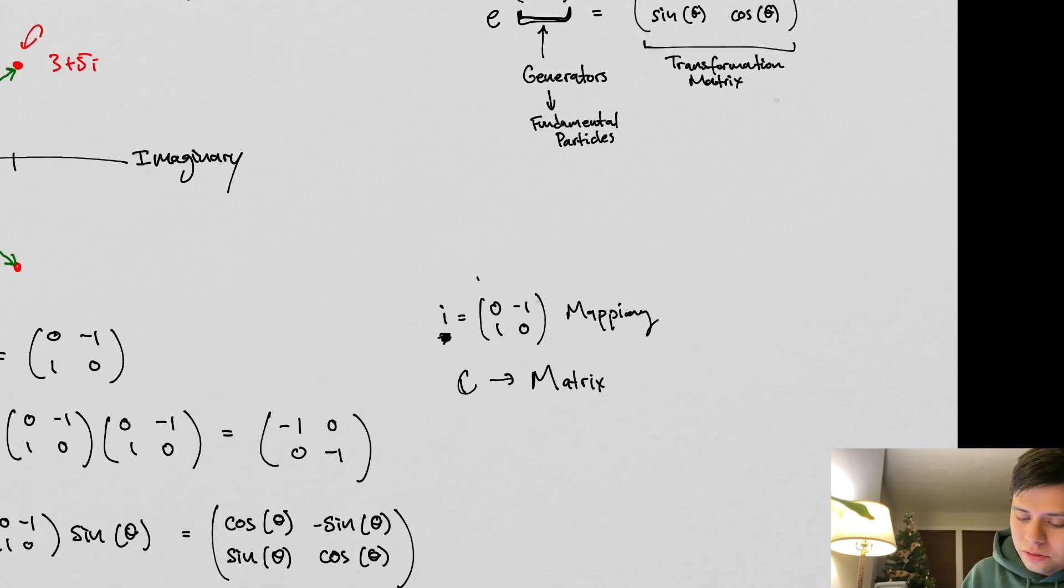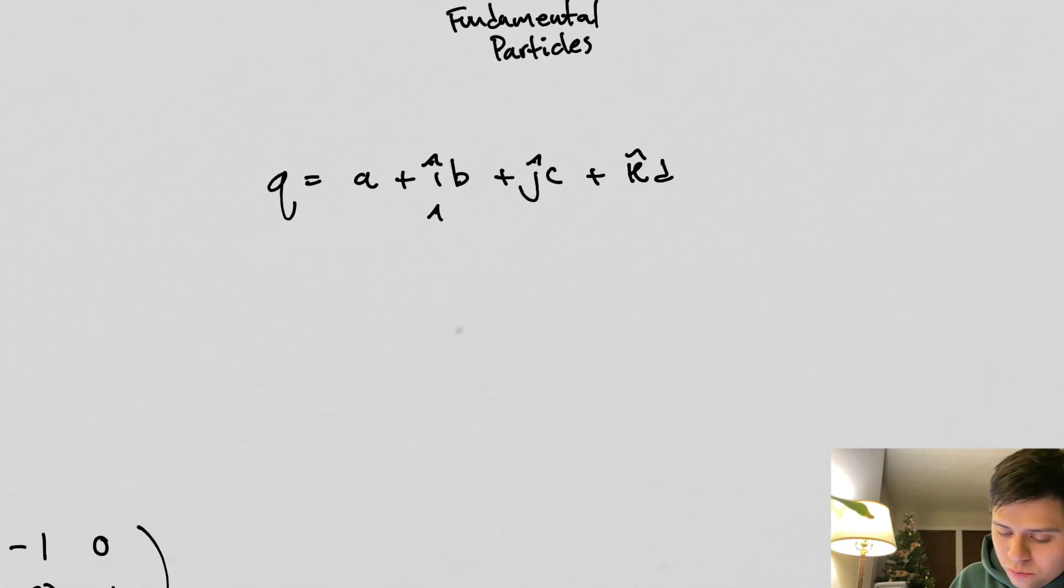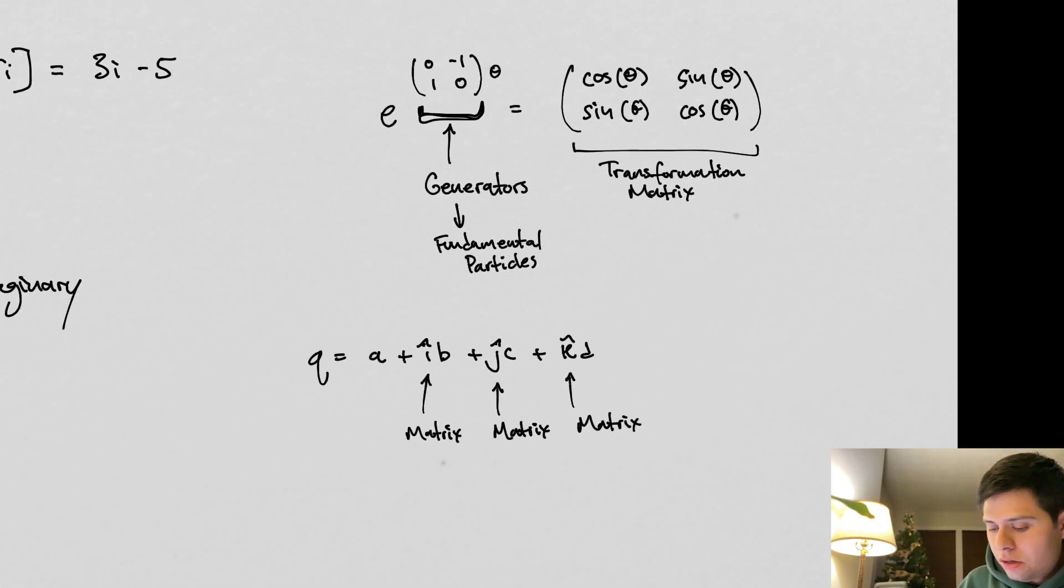Here's the kicker: when we get to quaternions—quaternion = a + i·b + j·c + k·d, with hats on these guys—when we get to quaternions, each one of these is going to be associated with their own matrix, depending on the transformation.